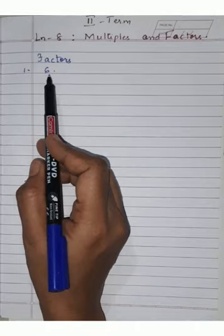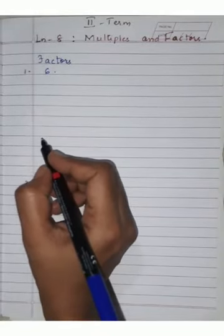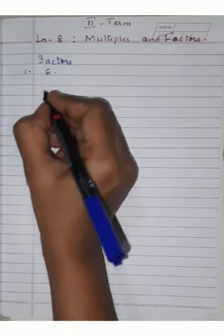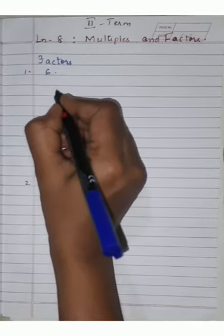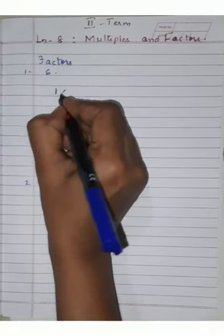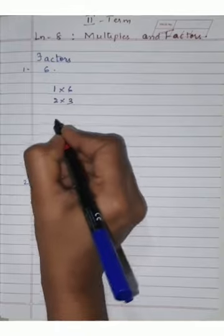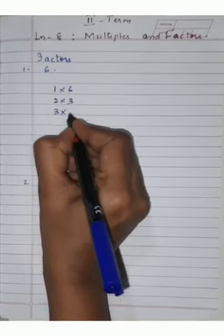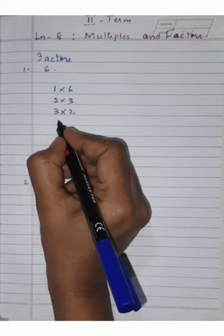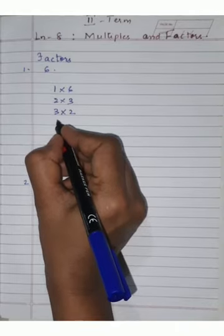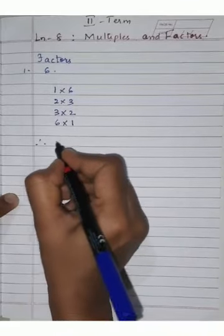The first example I've taken is 6. To find the factors of 6, you only have to write which tables 6 appears in. In the 1 times table: 1 × 6 = 6. In the 2 times table: 2 × 3 = 6. In the 3 times table: 3 × 2 = 6. 4 and 5 tables it is not coming. In the 6 times table: 6 × 1 = 6. Therefore we can write...